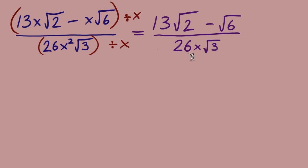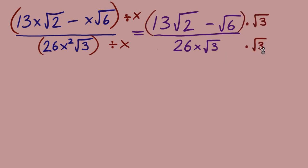The 26x that we see in the denominator is not a concern — it is outside of the radical. Remember, we are rationalizing the denominator, which means removing any radicals down there. What we choose to multiply to top and bottom is not going to be influenced by anything outside of a radical. We only care about the radical part. That's why we choose to multiply top and bottom by just radical 3. If we multiply by 26x, that's excessive — we want to stay away from that. Think only about clearing the radical.